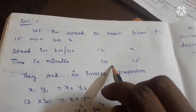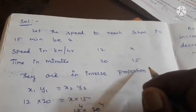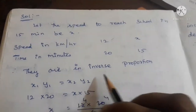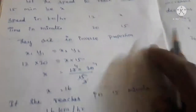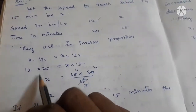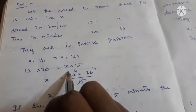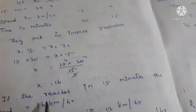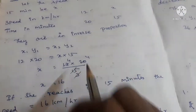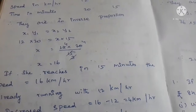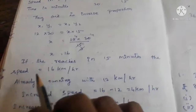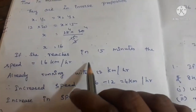Speed is 12 km per hour, time is 20 minutes. There is inverse proportion. x1 y1 equal to x2 y2. x1 value 12 into y1 value 20 equal to x2 value x into y2 value 15. Simplifying: 4 fives are 20, so x equals 16 km per hour.